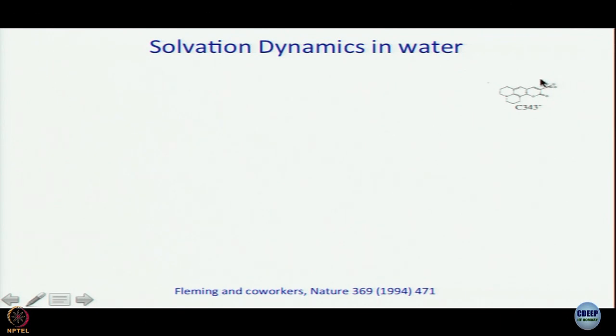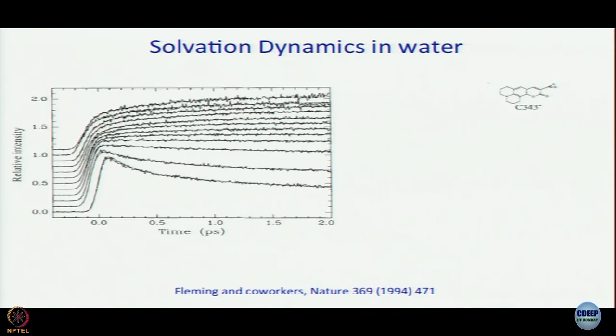The first report of solvation dynamics in water came in 1994, once again from Graham Fleming's group, and its importance is highlighted by the fact that it was published in Nature. Similar TDSS studies were performed using Coumarin 343, which has since become one of the most used fluorescence probes. Using Coumarin 343, Fleming and co-workers obtained time-resolved fluorescence decays in a femtosecond optical gating experiment.